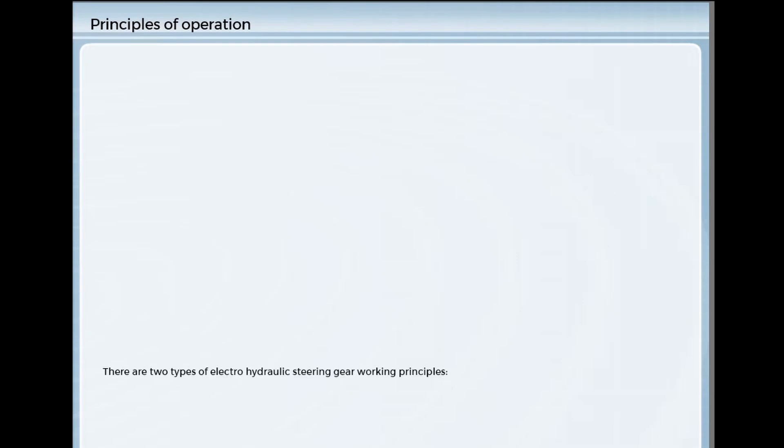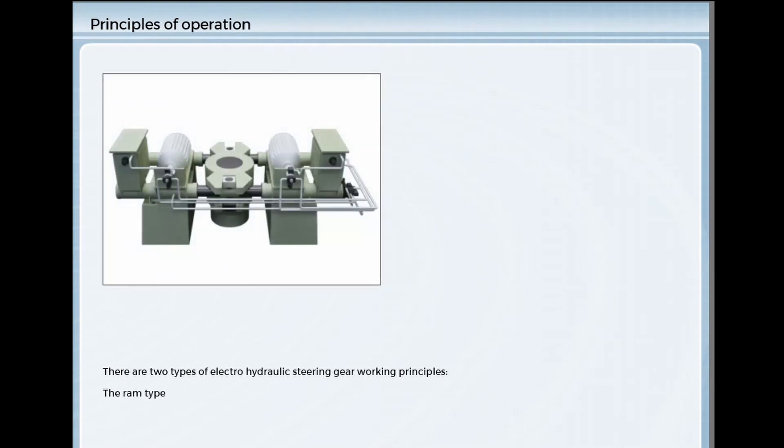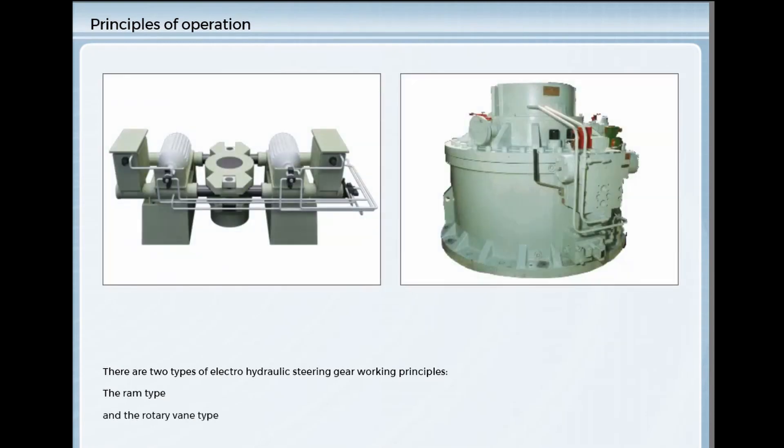There are two types of electro-hydraulic steering gear working principles: the ram type and the rotary vane type. Both types use the principle that force equals pressure times area. In both types, an incompressible fluid, hydraulic oil, is pumped into a chamber under pressure. The higher the pressure of the fluid or the larger the area of the actuator, the greater the force exerted.